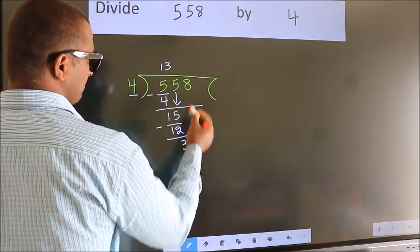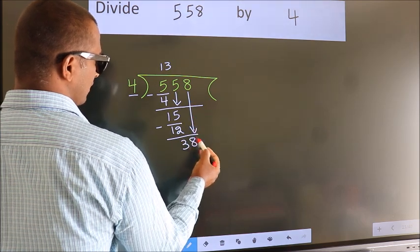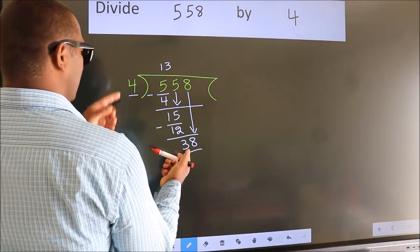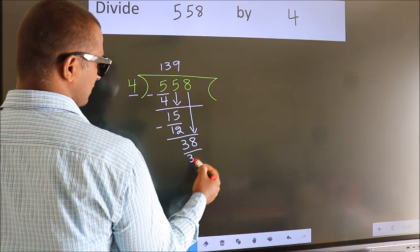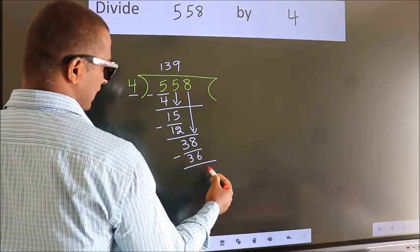After this, bring down the beside number. So 8 down, making 38. A number close to 38 in the 4 table is 4 nines, 36. Now we subtract. We get 2.